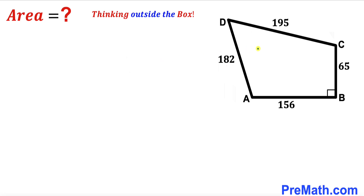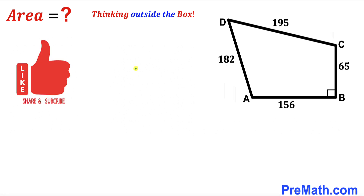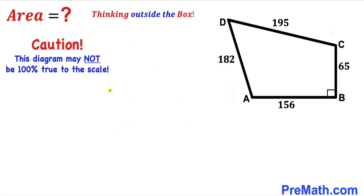Welcome to PreMath. In this video we have got quadrilateral ABCD such that its side lengths are 65, 156, 182, and 195 units respectively. Moreover, angle ABC is a 90-degree angle and our task is to calculate the area of this quadrilateral ABCD. Please don't forget to give a thumbs up and subscribe, and keep in mind that this figure may not be 100% true to scale.